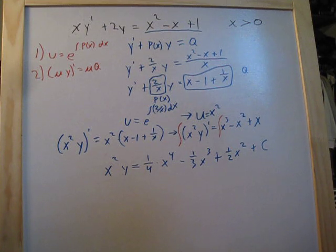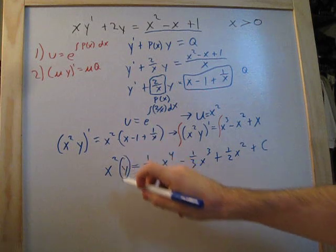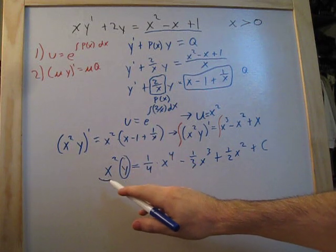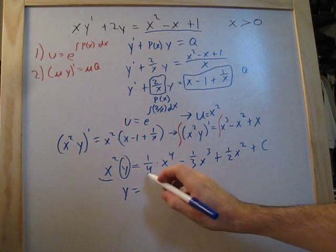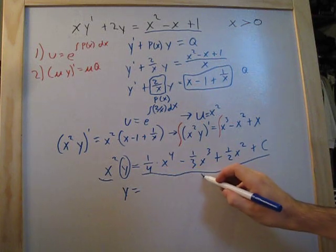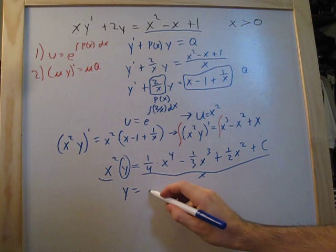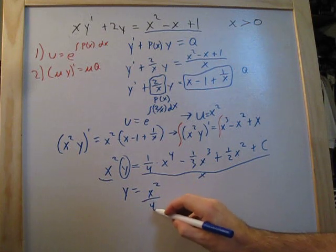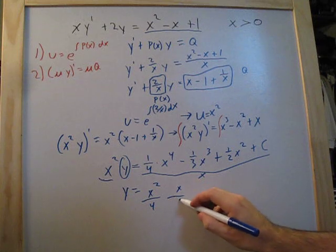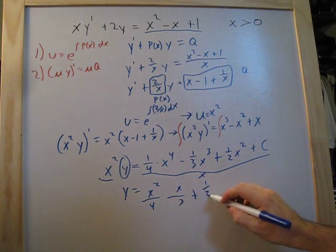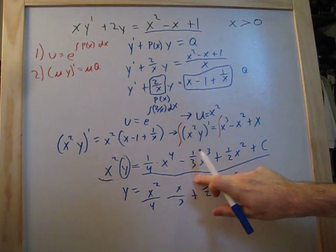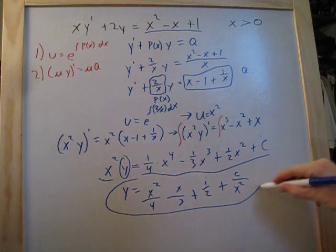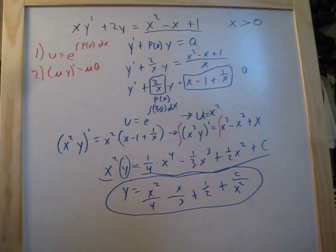Now we just need to solve for y by dividing everything by x squared. So y equals x squared over 4 minus x over 3 plus one-half plus c over x squared. And this right here is the general solution of this differential equation.